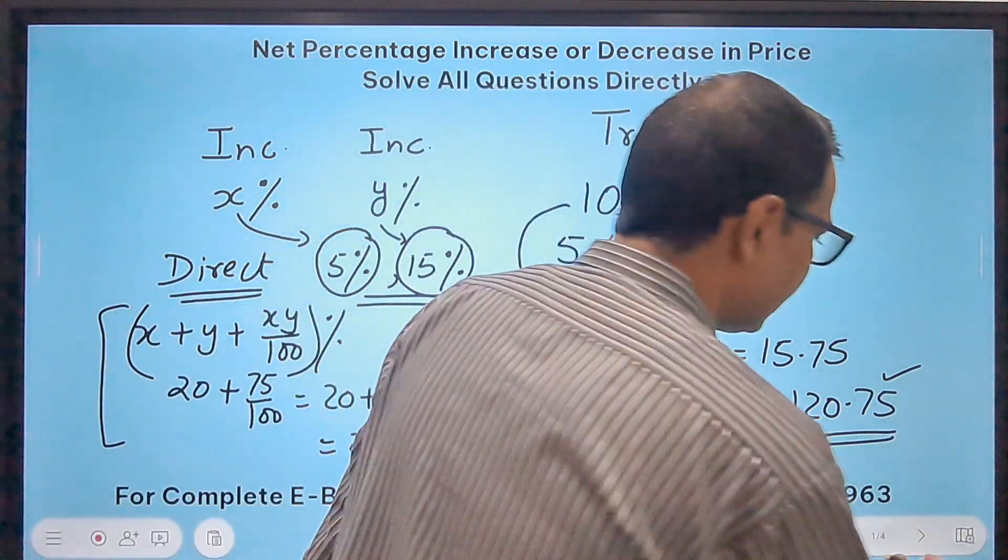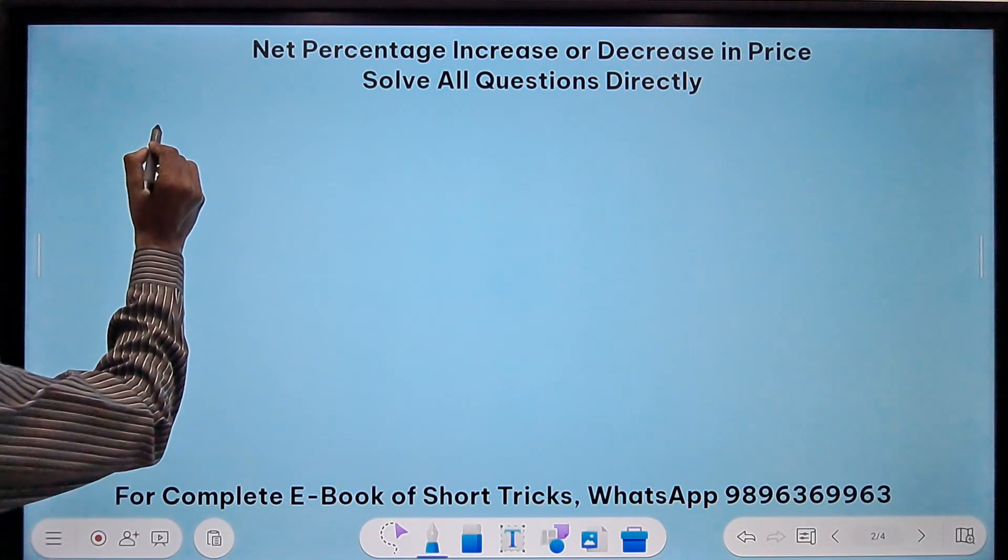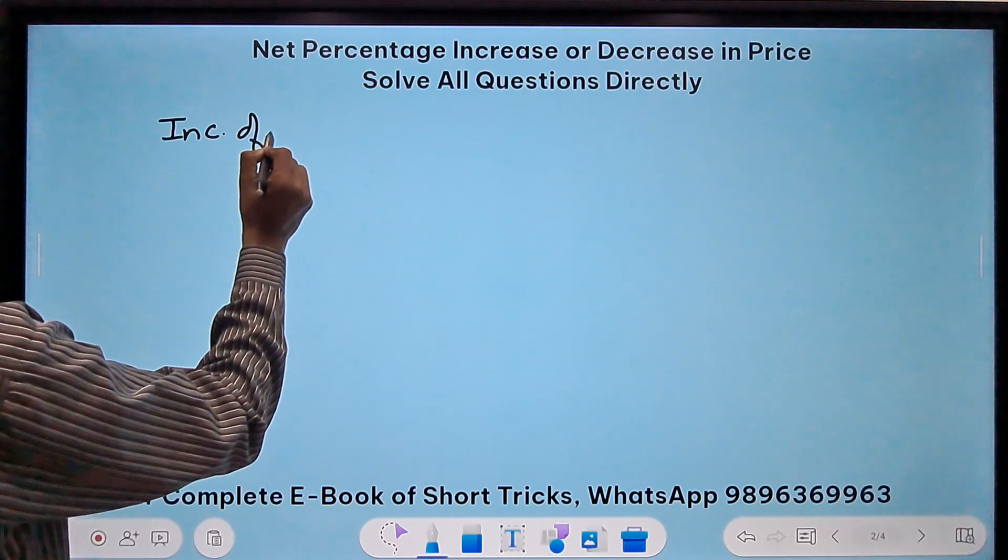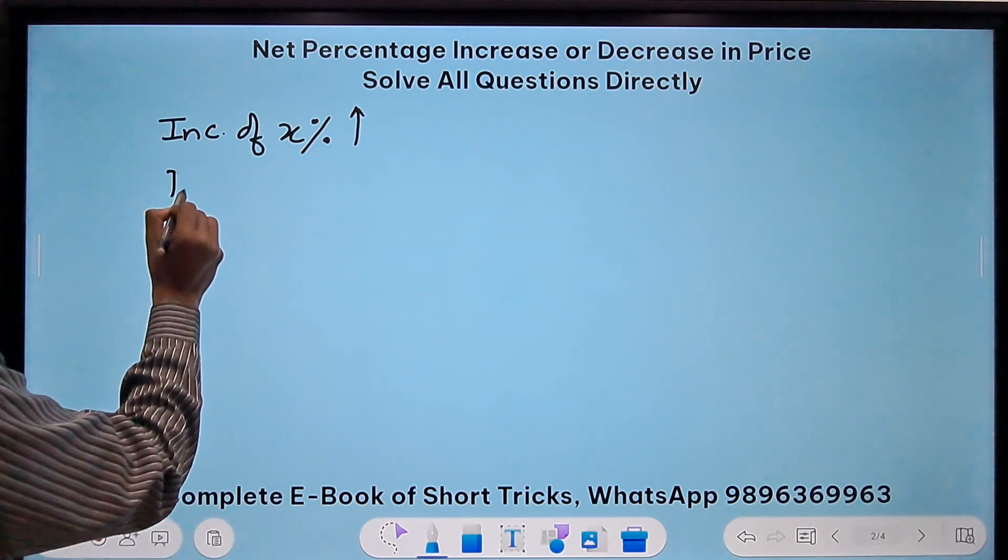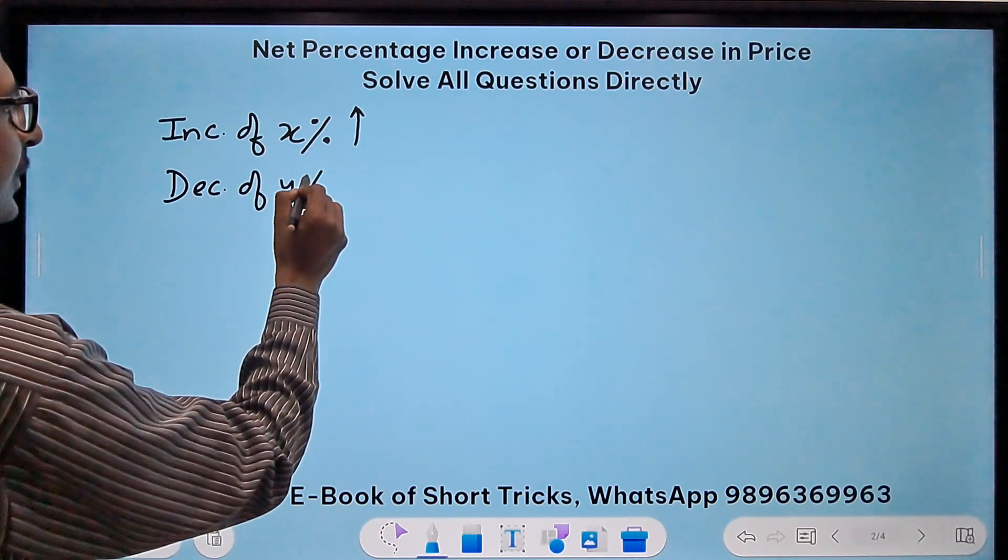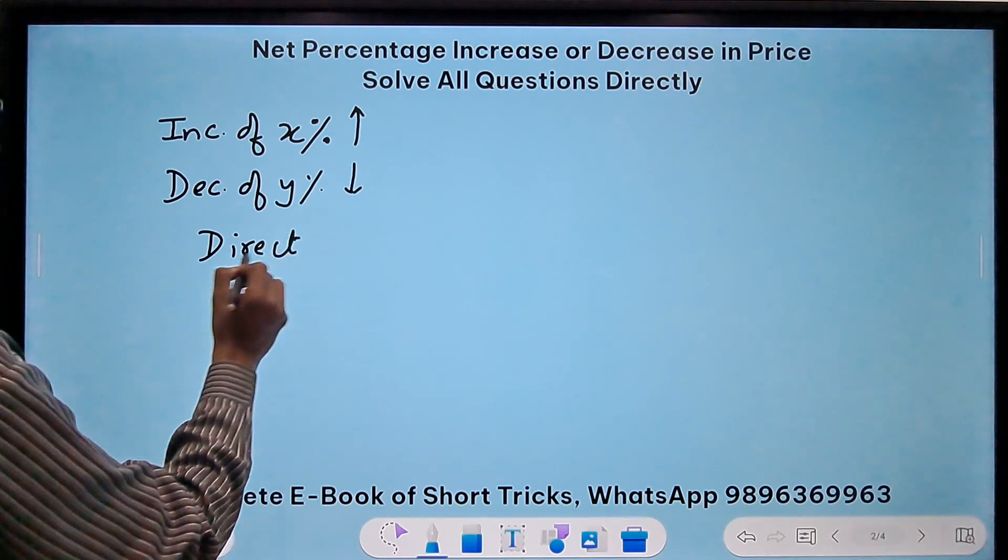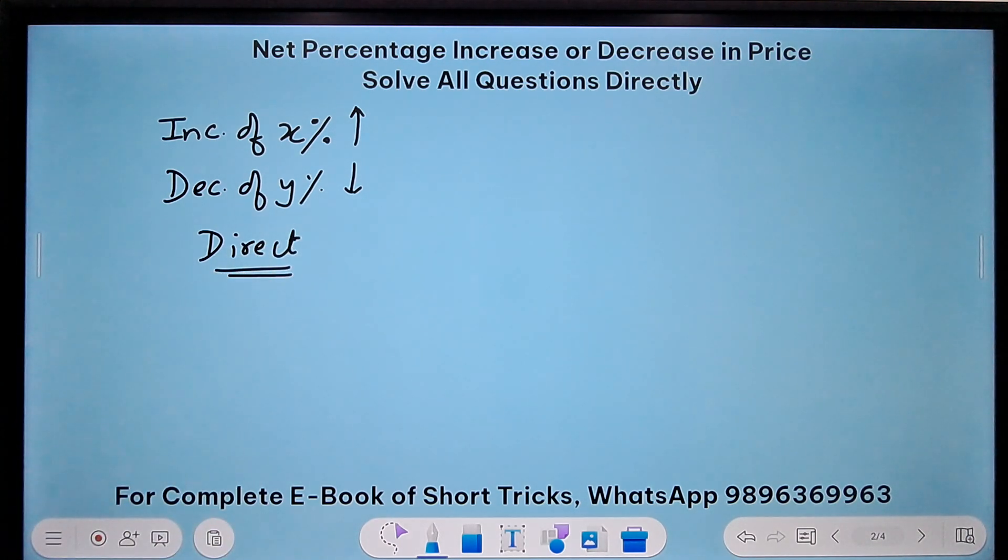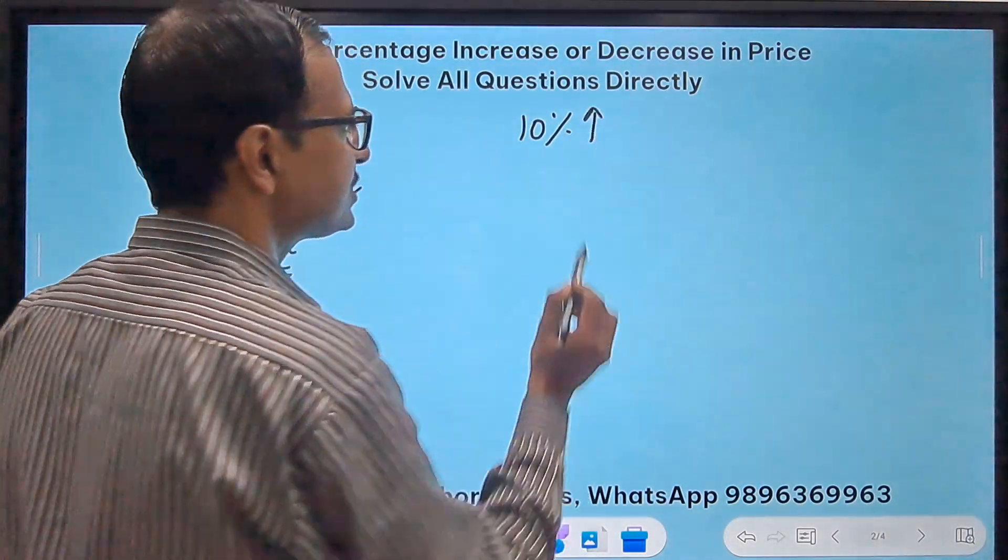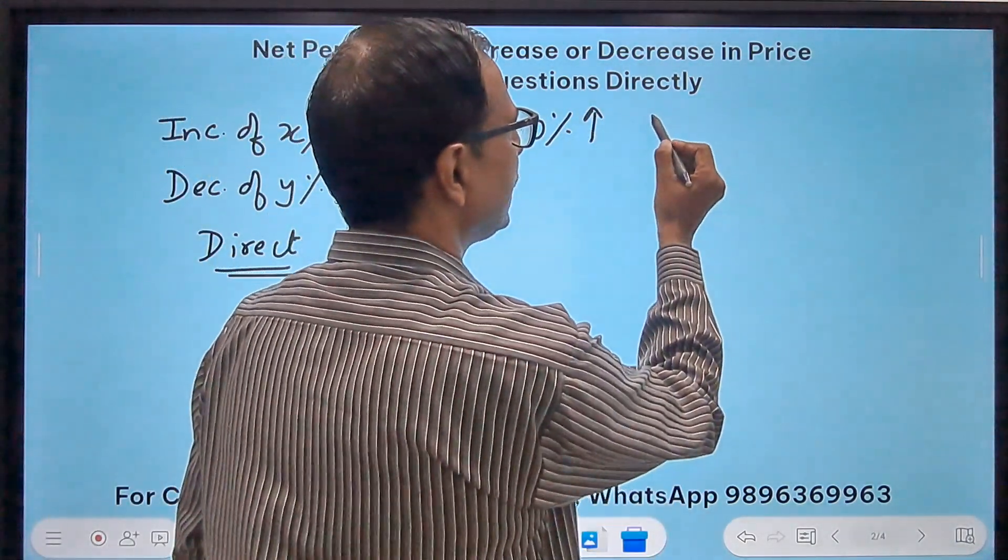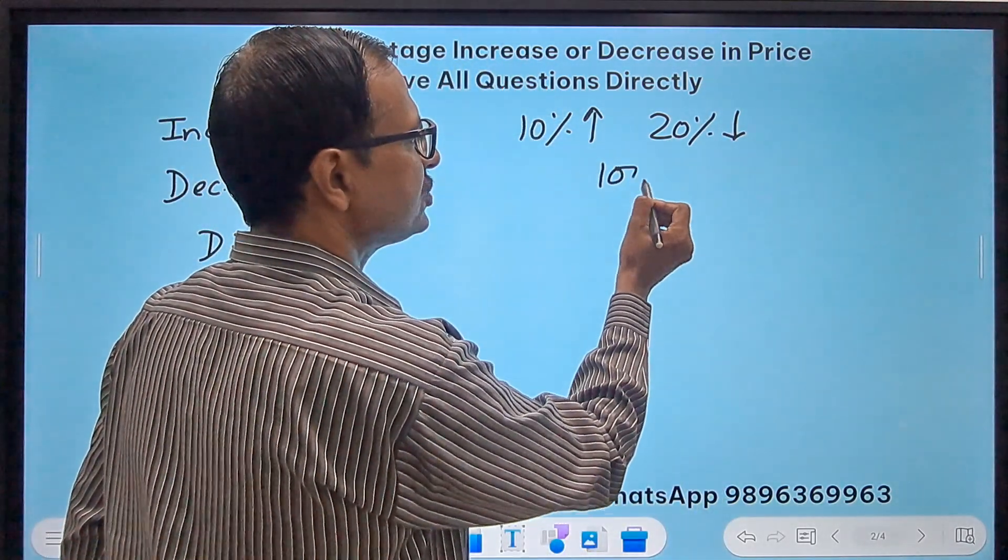Now let's vary the case. In the second case I have where there is an increase of x percent, and then there is a decrease of y percent. Let's see what happens through the direct method and through the traditional method. Let's take the value of x as 10 percent increase first, and second one is 20 percent decrease.